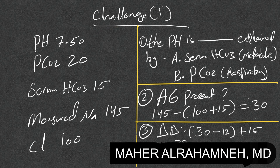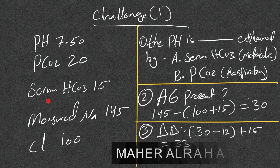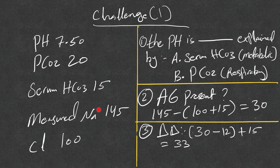Let's start with the first challenge: pH 7.50, pCO2 20, serum bicarb 15, measured sodium 145, and chloride 100. Before analyzing this ABG, note that you always use the serum bicarb — not the calculated one from the ABG — and always use the measured sodium on the BMP or CMP, not the corrected one for hyperglycemia in case there is critical hyperglycemia.